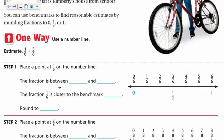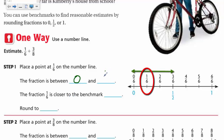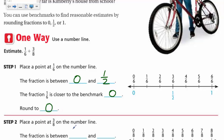The fraction one-sixth is between zero and one-half. The fraction one-sixth is closer to the benchmark zero. So we're going to round one-sixth to zero — it's actually really close to zero.